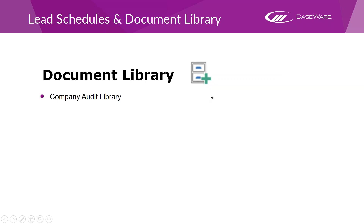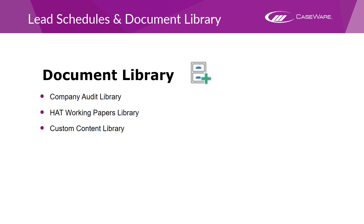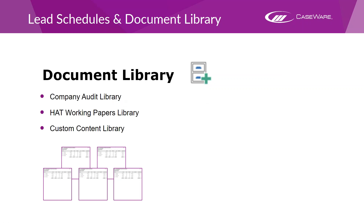If you're using the Audit Advanced Mercia template, you'll have a Company Audit library. If you're using HAT, you'll have the HAT library. But we can also create our own custom content libraries, which are a good option at a firm level to make sure we've got certain documents available to each member of staff. The kinds of documents you can have include standard lead schedules within Caseware, as well as Word, Excel, and Adobe documents — Adobe for guidance, Word for management letter templates, Excel for TFA schedules and proformas.